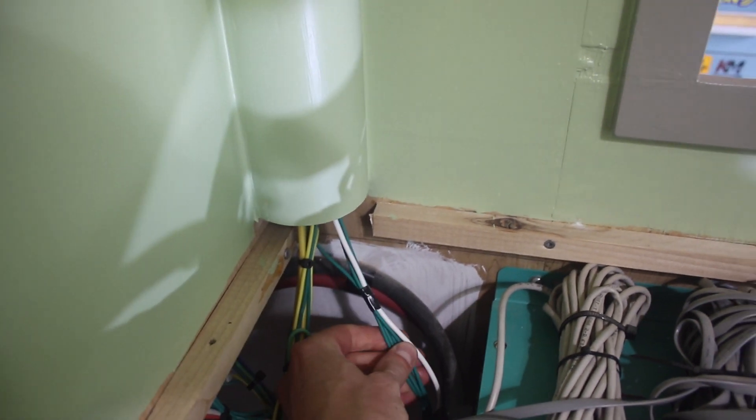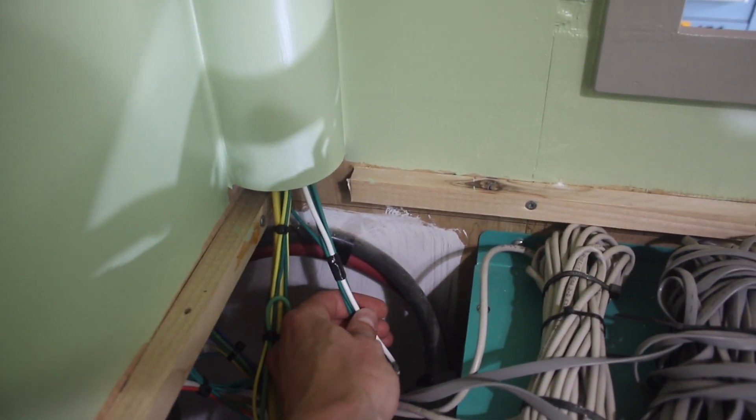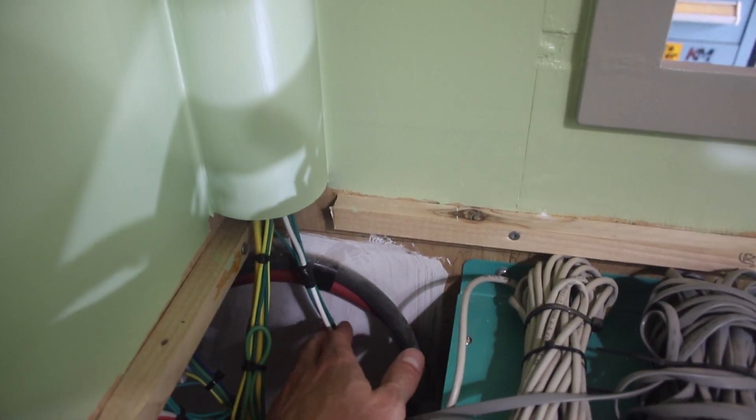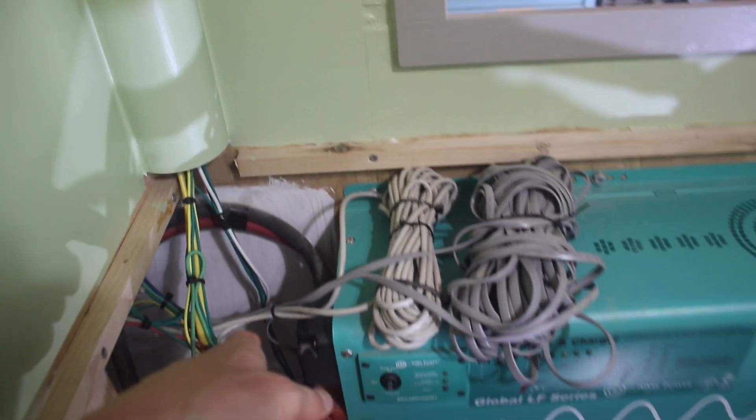This bundle of wires here is actually for the trailer wiring, all the lights. Like when it's hooked up to the truck, brake lights, all that. And that's its own little wiring harness. Comes out right there. And it's its own circuit.